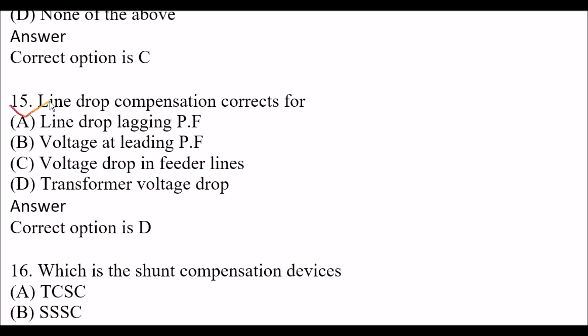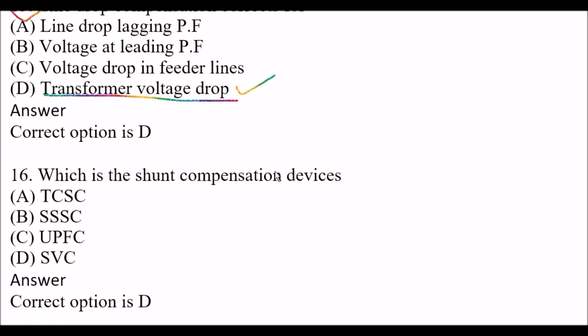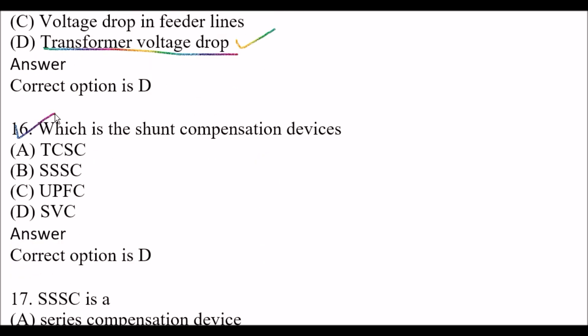Next question: Line drop compensation corrects for — Option A: Line drop lagging PF (power factor). Option B: Voltage at leading power factor. Option C: Voltage drop in feeder lines. Option D: Transformer voltage drop. The right answer is Option D, Transformer voltage drop. Line drop compensation corrects for transformer voltage drop. Next question: Which is the shunt compensation device? The right answer is Option D, SVC.